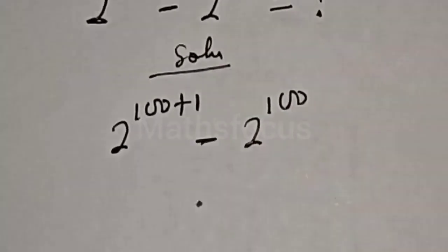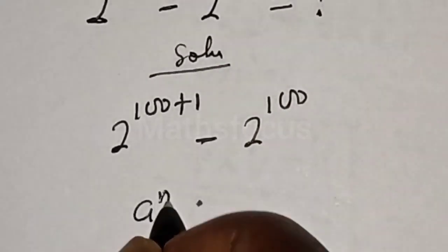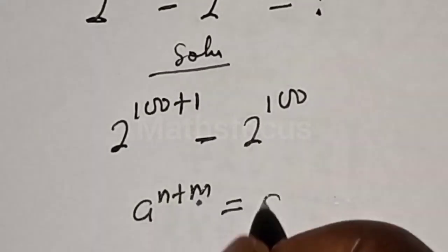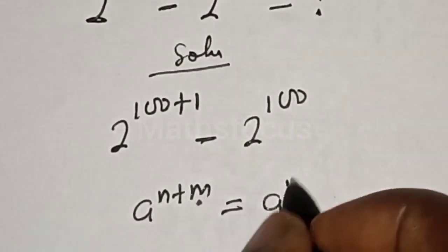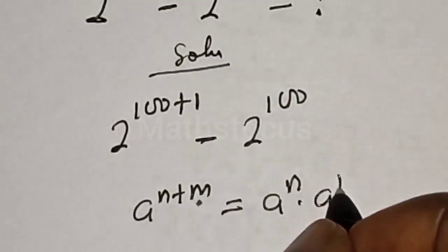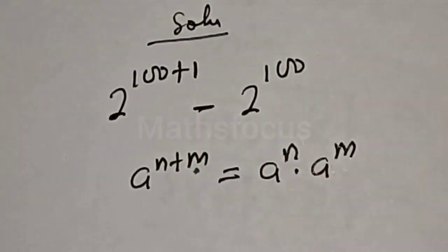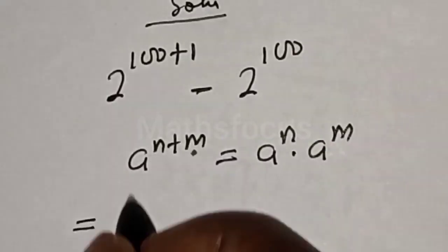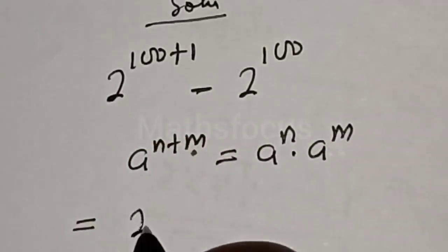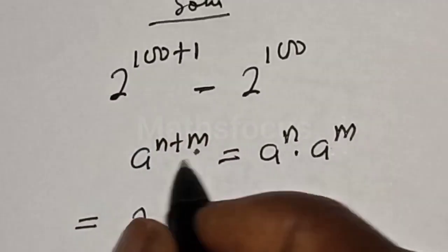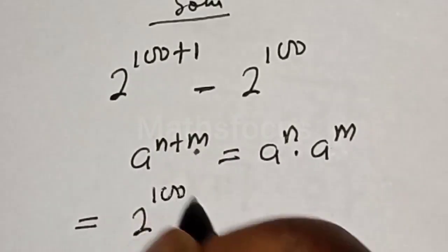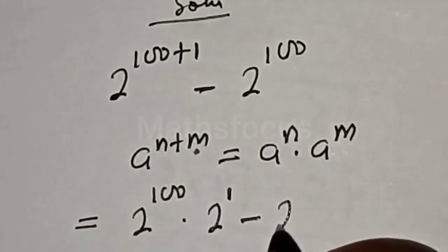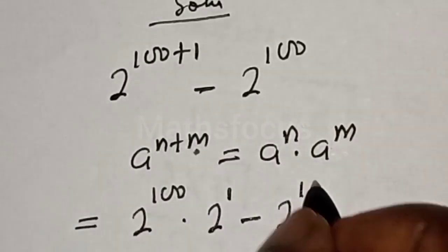Take note of this rule: if you have a raised to power n plus m, this is equal to a raised to power n multiplied by a raised to power m. So this becomes 2 raised to power 100 multiplied by 2 raised to power 1, minus 2 raised to power 100.